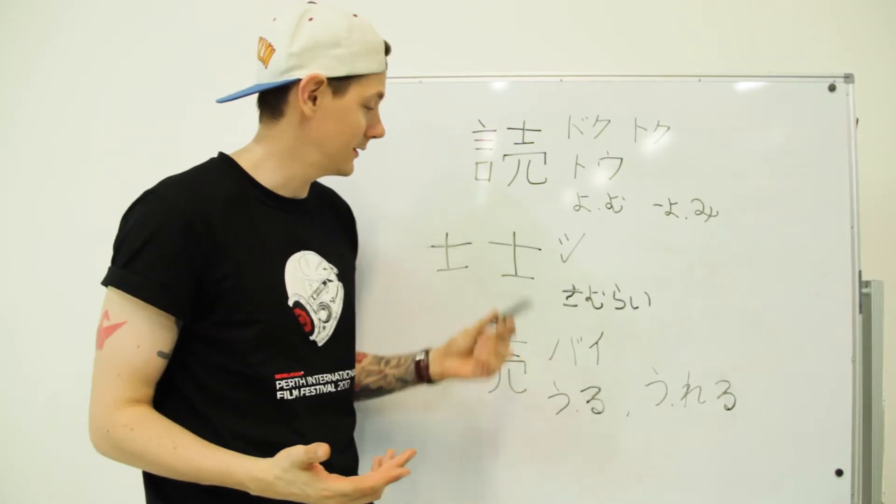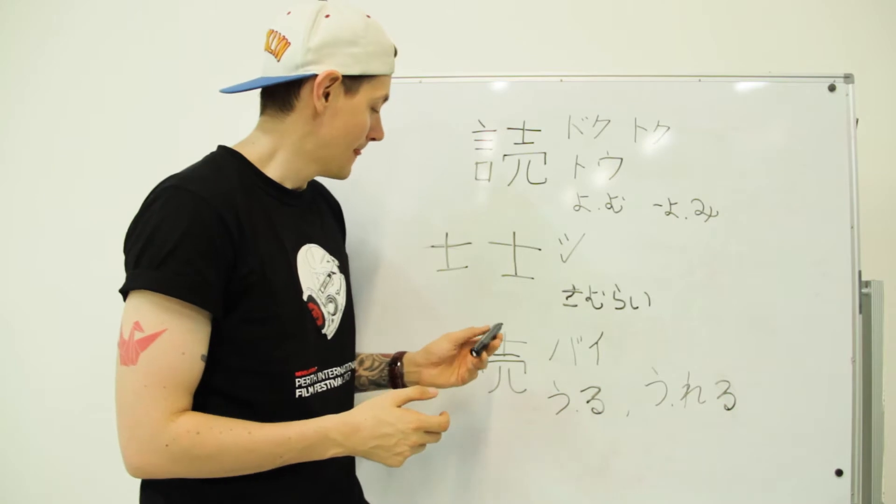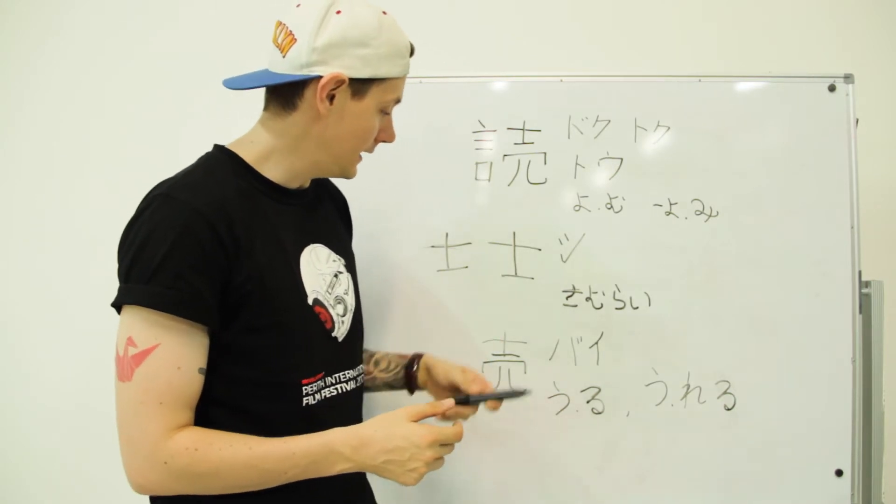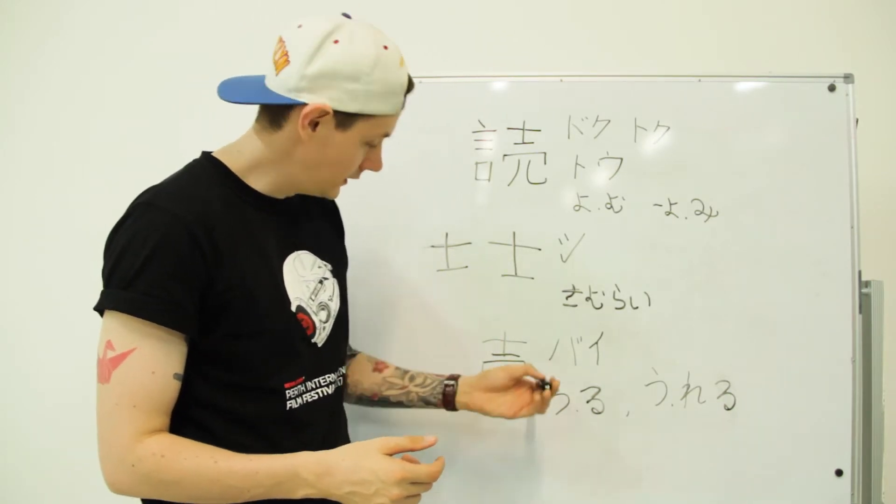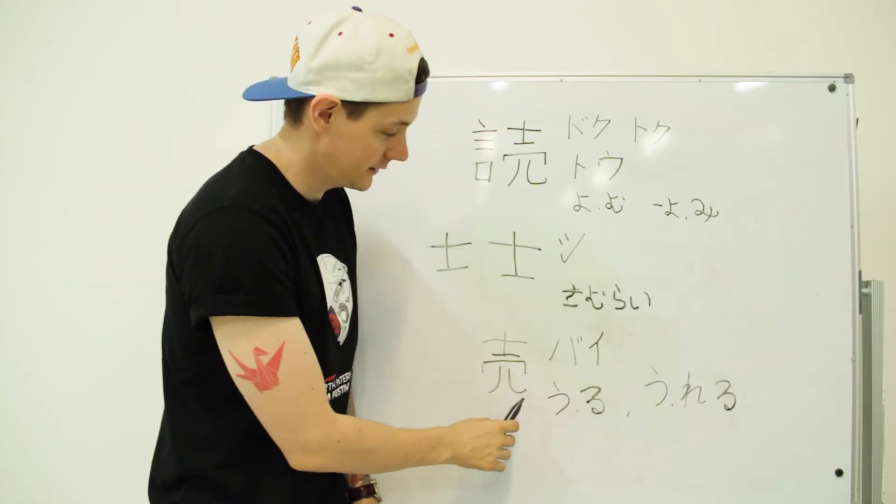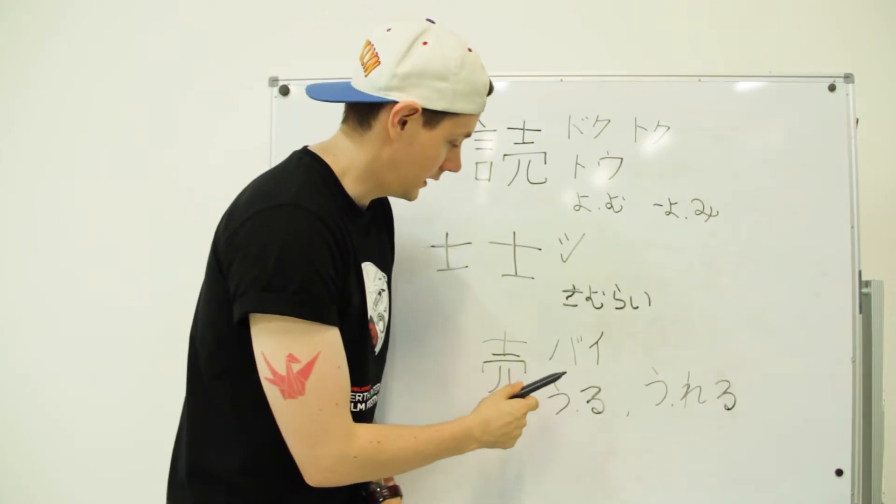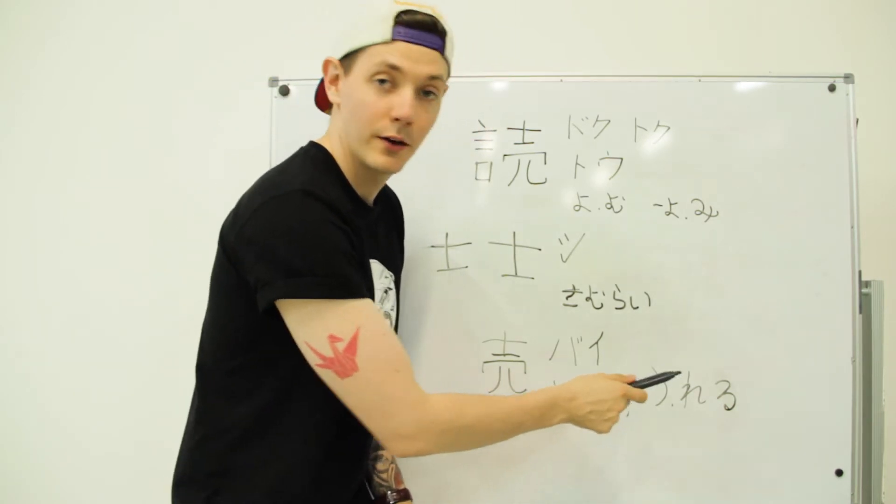Plus, Samurai, you know, it's cool. You should be able to see this in a lot of anime if you watch a lot of anime. It then appears in the Kanji for sell. You've got Samurai, and then you've got this lid on these legs. Bai, like baiten, and uru to sell, uru to be sold.